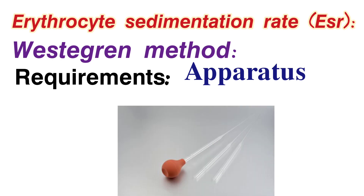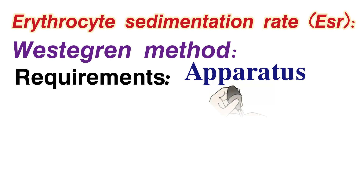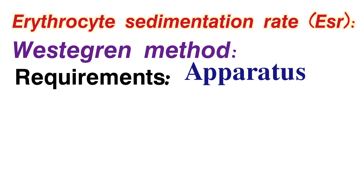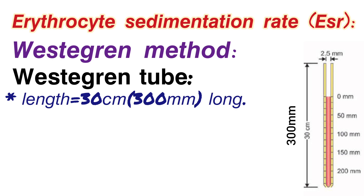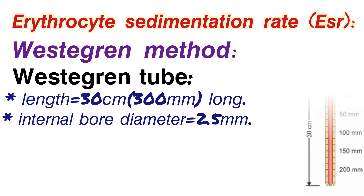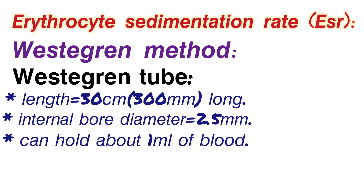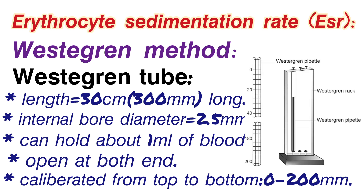For the Westergren apparatus, we use a rubber bulb to draw blood into the Westergren tube — you should not use your mouth to draw blood directly. The Westergren tube is 30 cm long, which is 300 mm. The bore diameter is 2.5 mm — the same as the Winthrobe tube. Both ends of the Westergren tube are open, and the markings run from 0 to 200 mm top to bottom.